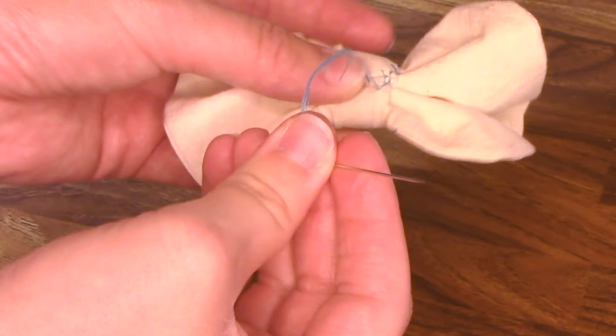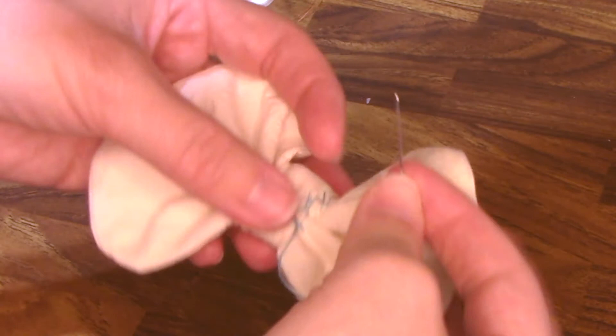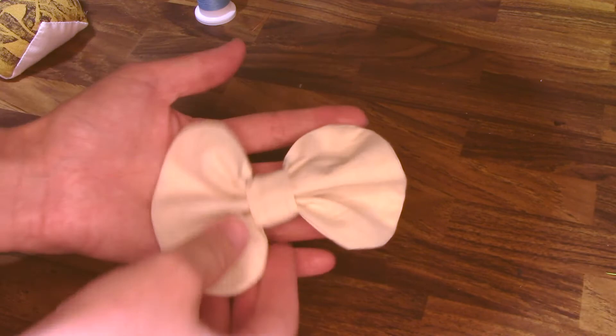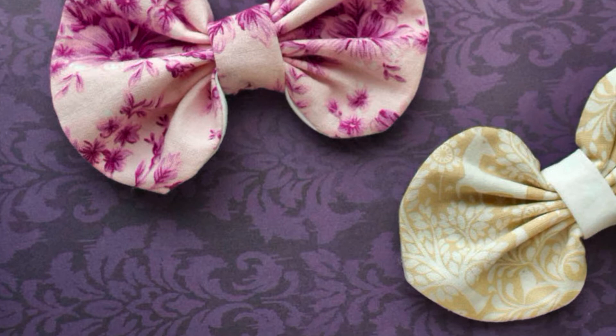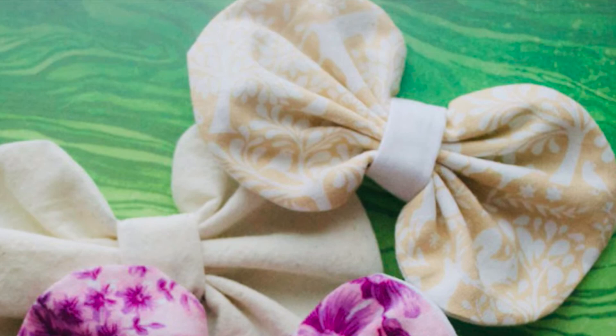This is a great project for using up scrap fabrics or extra fancy fabrics you might have. These bows can be attached to barrettes or headbands, chokers or other jewelry pieces. They can be added as accents to dresses and other garments, used to adorn purses and other accessories, or whatever you can think of.